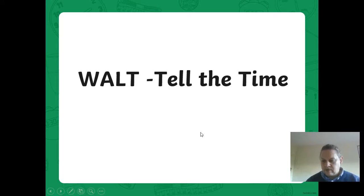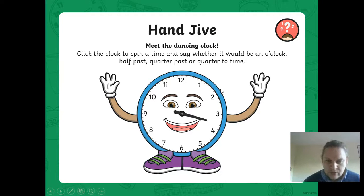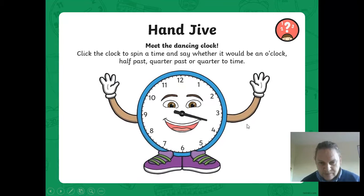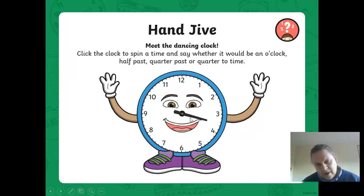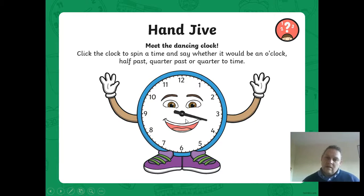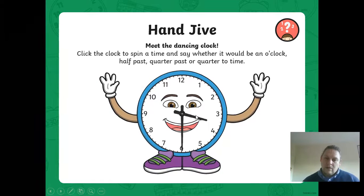Our work for today is to tell the time, so we're continuing with our work on time. We've got this interactive figure, and we need to click on him to say whether or not it would be an o'clock, a half-past, a quarter-past, or a quarter-to time. We click, and he shows us that it's half-past. So where our hand is pointing tells us what it's going to be - if it's halfway between the three and the four, we can guess that it's half-past three.